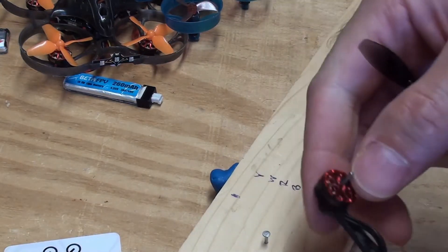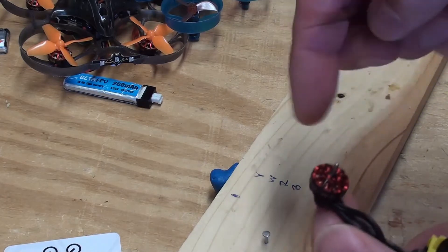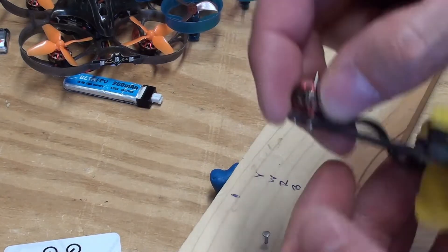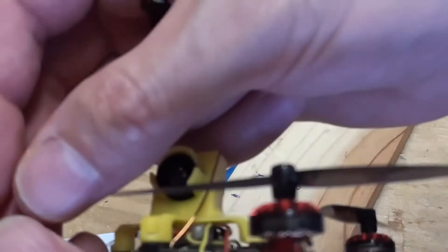Instead of pushing directly on the prop, which pushes against the bell and can cause it to shift and loosen up, I use a different method.